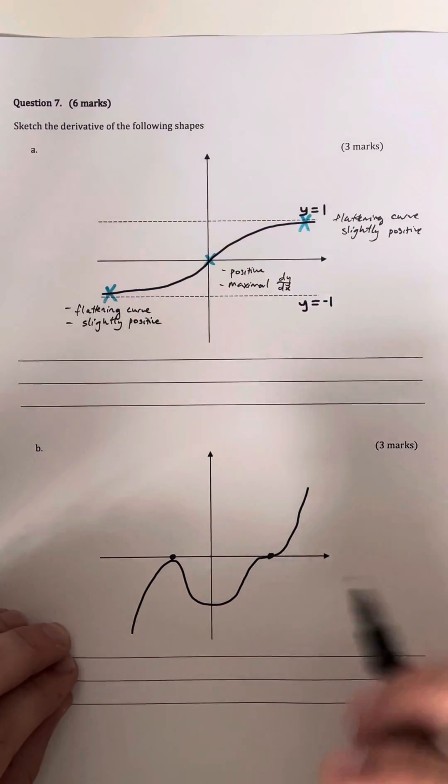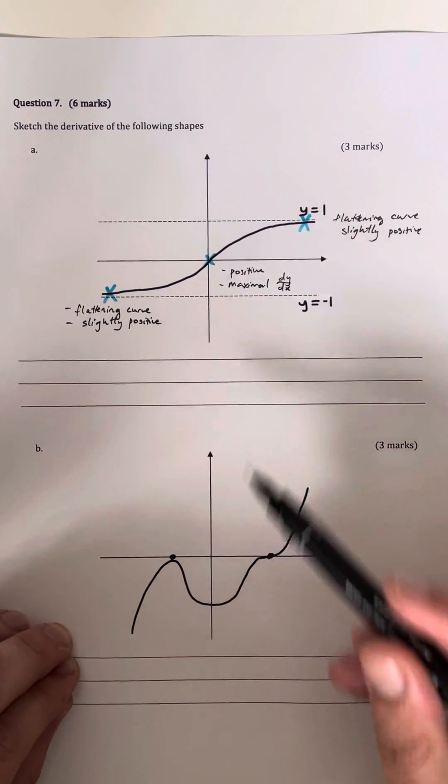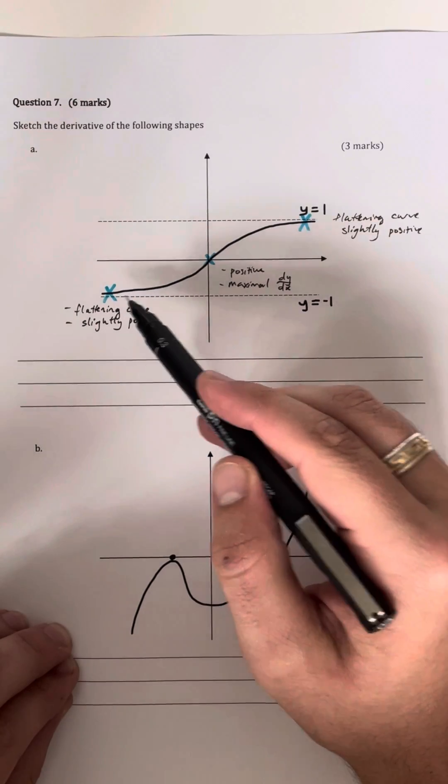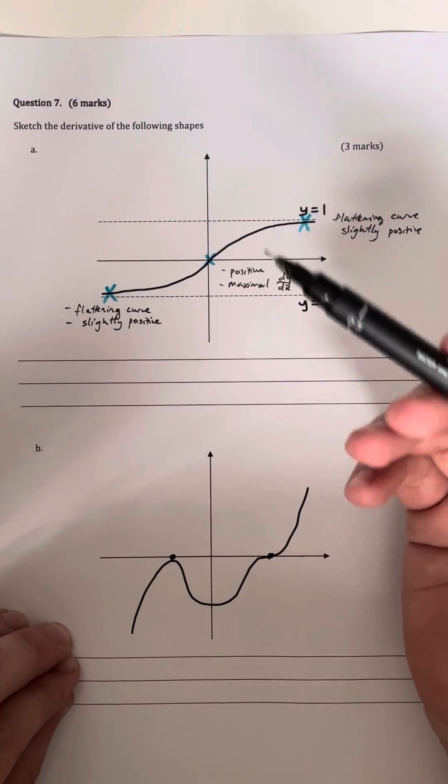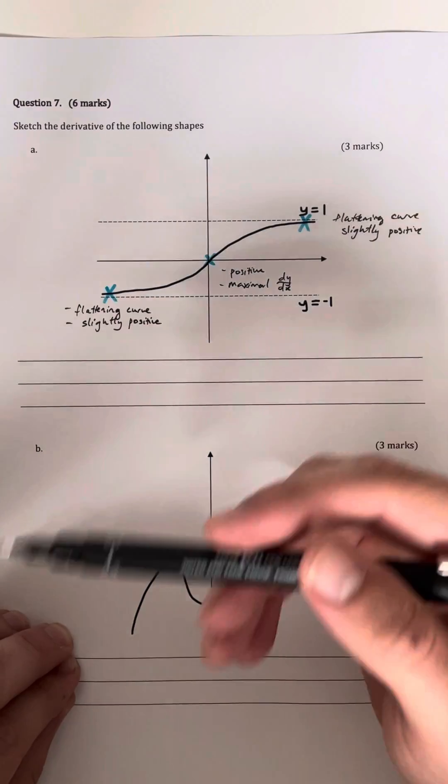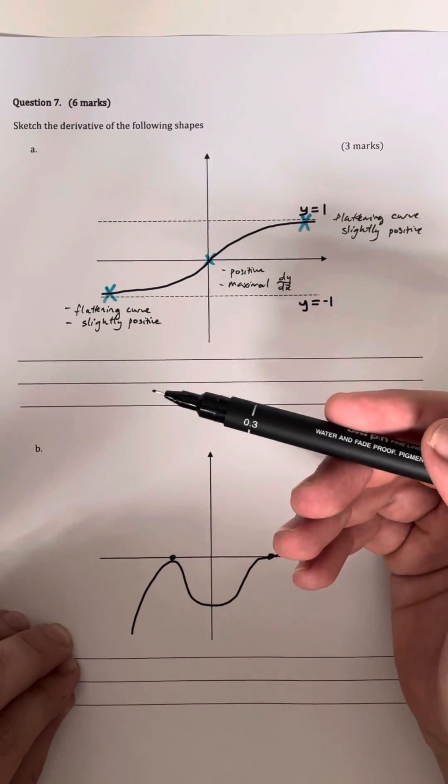This is a hard VCE methods question but really important to understand before your first sack. In this case we're asked to sketch the derivative of this function. We don't necessarily know the equation, but based on the shape and based on the trends we should be able to get a rough sketch of what the derivative looks like.